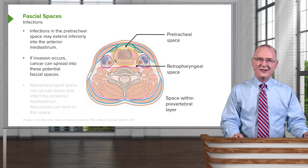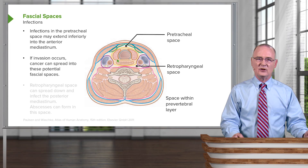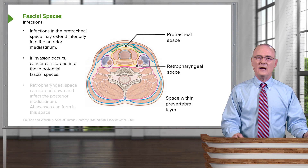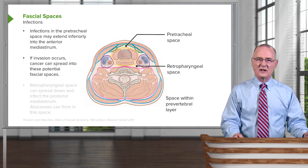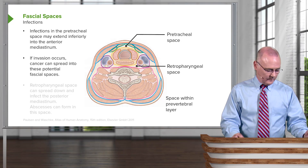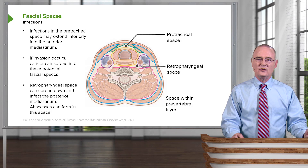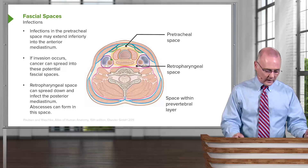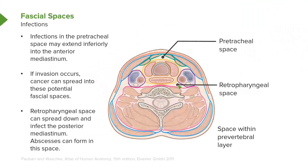A second clinical consideration is if invasion occurs — that is, invasion of a cancer — the cancer can spread into any one of these three potential fascial spaces. A third consideration is with respect to the retropharyngeal space. If there's an infection here, it can spread inferiorly and infect the posterior mediastinum, and that could then form an abscess in this particular retropharyngeal space as a result.